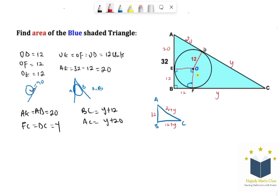So using the rule of Pythagoras theorem. So using the Pythagoras theorem we have that C squared equals A squared plus B squared. That is (20 plus Y) squared equals 32 squared plus (12 plus Y) squared.